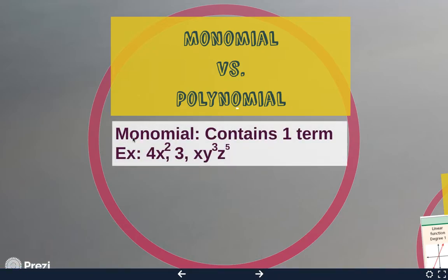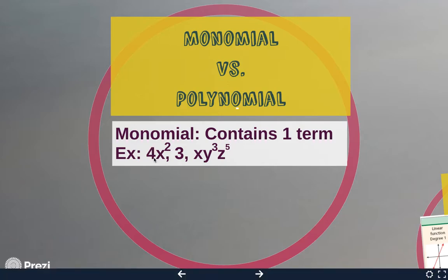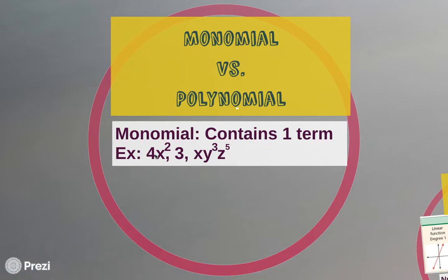Mono is a prefix that means one, and monomial means it contains one term. Terms are things that do not have addition signs or minus signs — they are separated by multiplication or division. Like this 4x squared, there's secretly a multiplication symbol in between them, so this is like 4 times x squared. So this is one term.